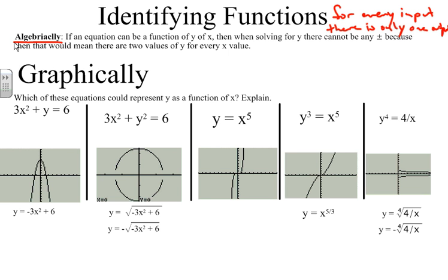So when we do this, for algebra we say if an equation can be written as a function—y as a function of x—that means x is the input, y is the output. Then if we're solving for y, which we recall was the output, because we always solve for the output, there cannot be any plus or minus or two values because then that would mean there are two values of y for every value of x. And that goes against our number one definition, the thing that we hang our hat on. For every input, there is only one output.